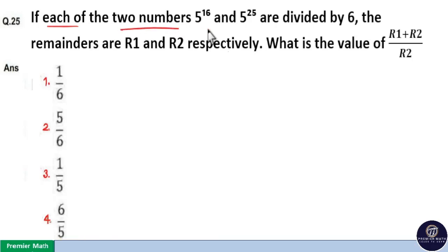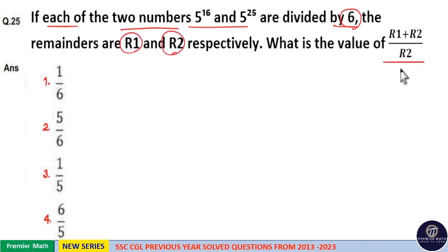If each of the two numbers 5 raised to 16 and 5 raised to 25 are divided by 6, the remainders are R1 and R2 respectively. What is the value of R1 plus R2 by R2?